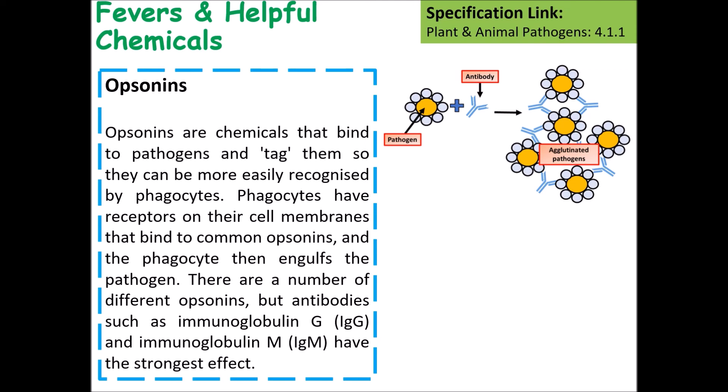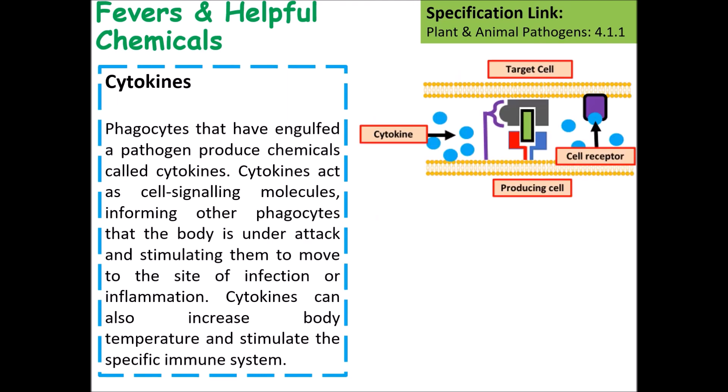Cytokines are produced by a number of different cells. Cytokines act as cell signaling molecules, informing other phagocytes that the body is under attack, and then cause those phagocytes to move towards that area.